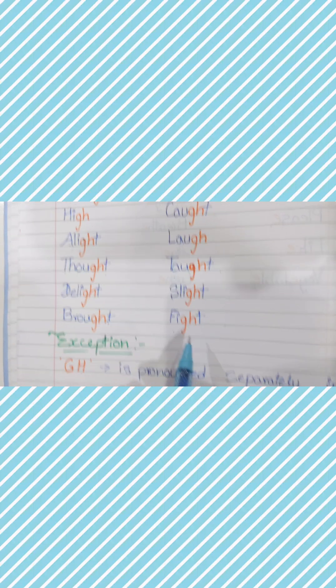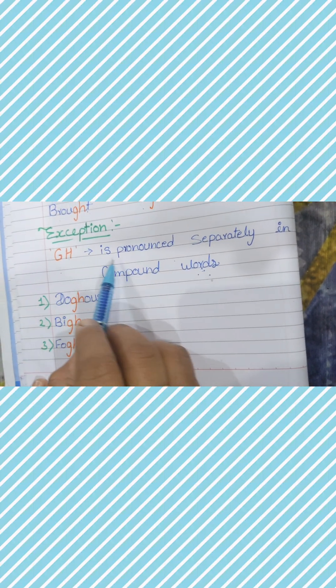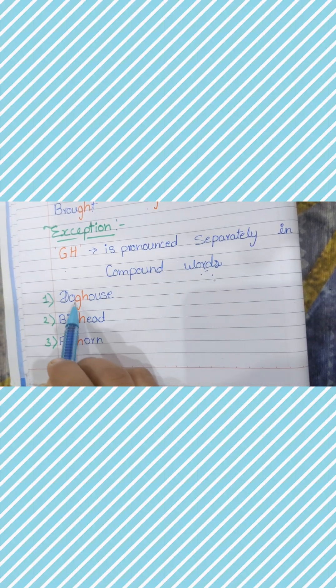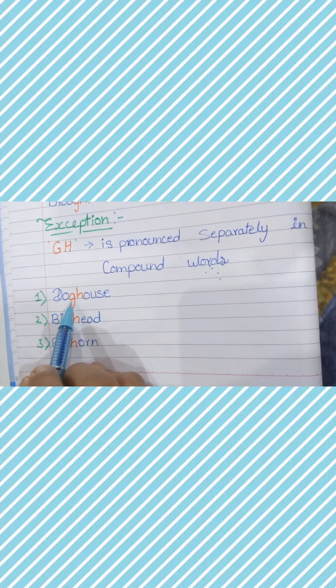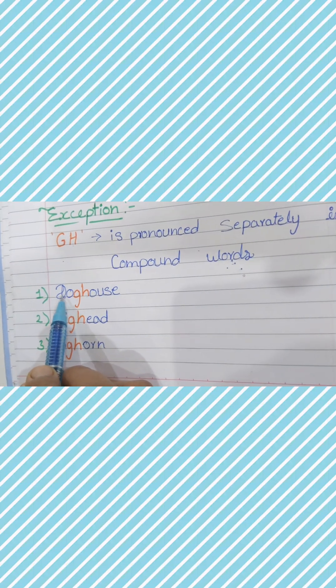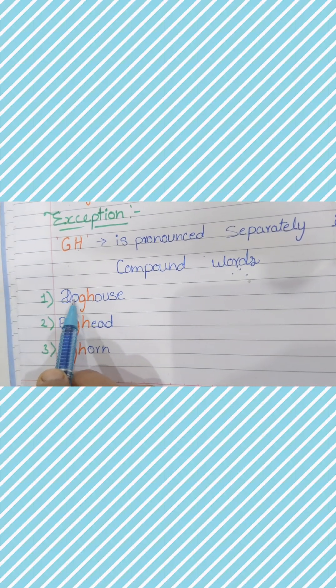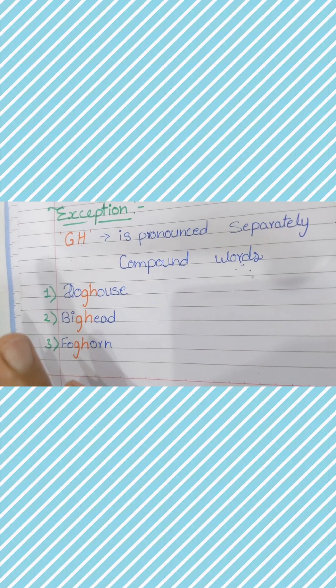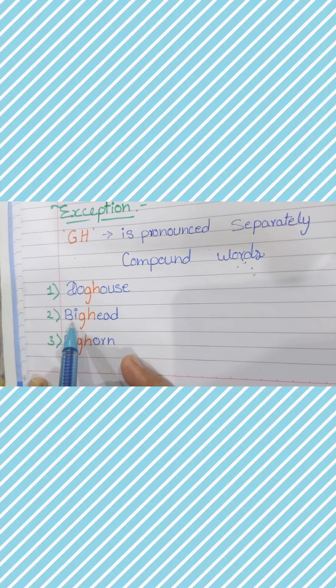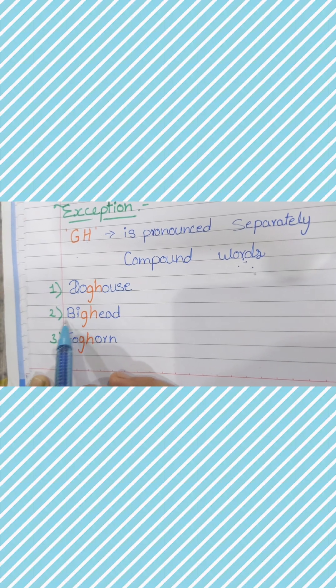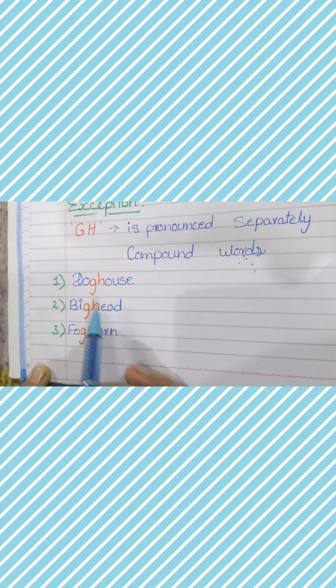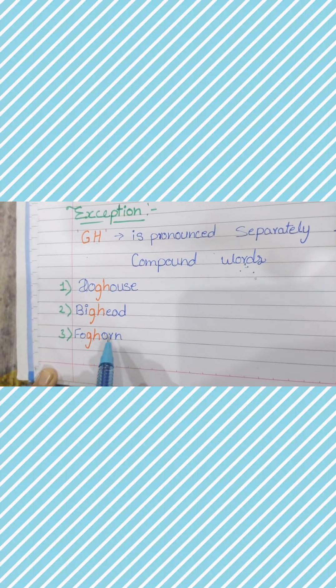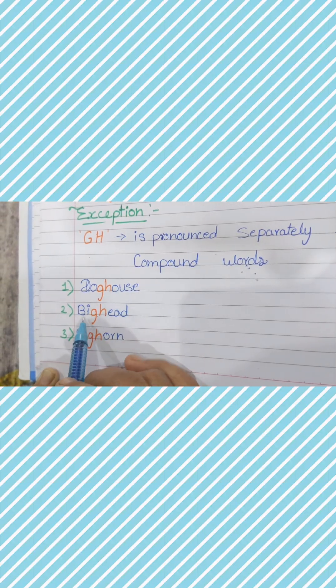Next, as I told you, GH is pronounced separately in compound words. How is it? Doghouse - GH. Do and house sound. Bighead - GH silent. Doghouse, bighead.